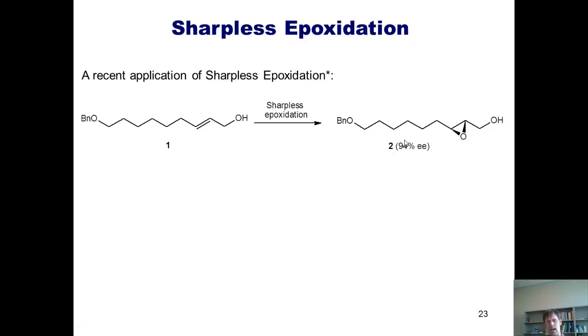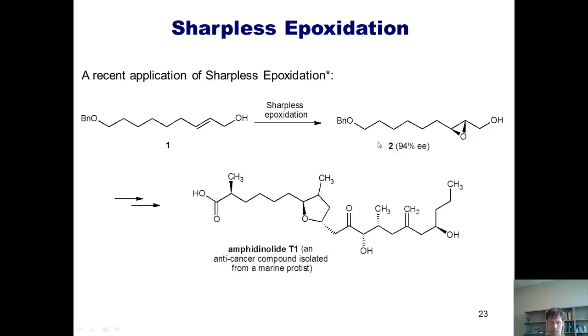Is this a pretty cool reaction? You bet. Because it enabled these scientists to take molecule 1, which is completely achiral, and convert it with near complete exclusivity into molecule 2, which is chiral. Compound 2, incidentally, was then transformed over various steps into this molecule, amphidinolid T1, an anti-cancer compound isolated from a murine protist.